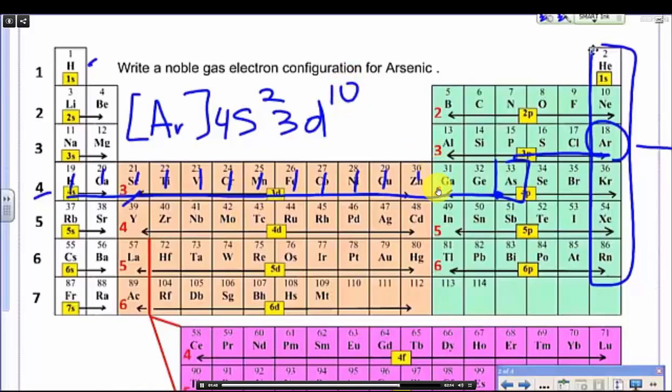Now we move to the next sub-level. We have energy level 4, sub-level p. At this specific sub-level 4p, how many electrons are there? 1, 2, 3, 4, 5, 6. But wait, we're looking for arsenic, so we stop there. We have 1, 2, 3 only.